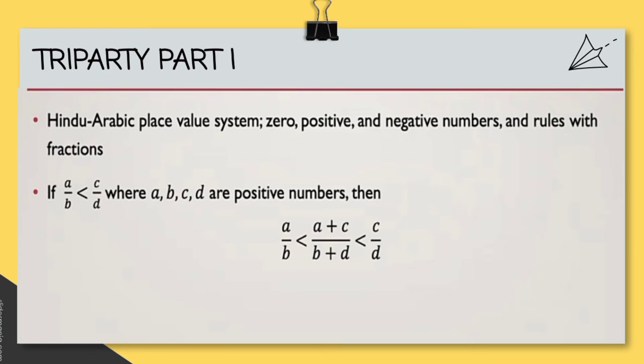In Tripartite Part 1, he focuses on the Indo-Arabic place value system, zero positive and negative numbers, and rules with fractions. He really focuses on that, and something he ended up proving: If the fraction a over b is less than c over d, where a, b, c, and d are positive numbers, then if you add the numerators and the denominators together, that number is going to be greater than a over b but less than c over d. We are going to see that proof.